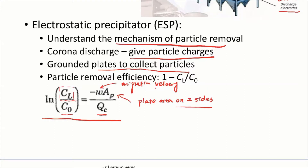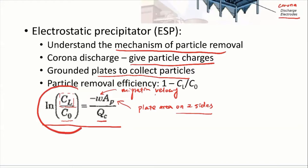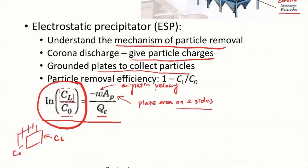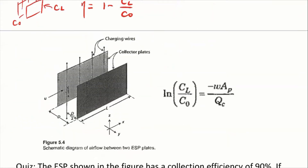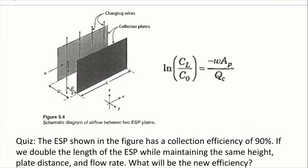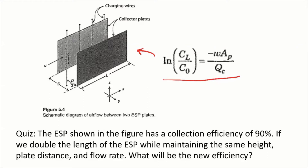One thing we didn't talk about is the particle removal efficiency. When we talk about efficiency, we're basically talking about what fraction of particle concentration is removed. This equation gives you the concentration of particles that penetrated through the ESP — C_L is the concentration at the end, C_0 is at the inlet. So the deposited particle fraction is just 1 minus C_L divided by C_0. This is the efficiency of the ESP.